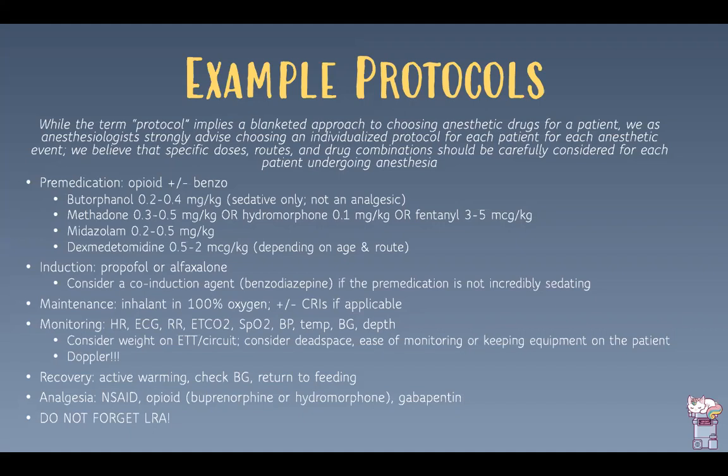Monitoring is standard: heart rate, ECG, respiratory rate, end-tidal CO2, pulse oximetry, blood pressure, temperature, blood glucose, and anesthetic depth. Consider the weight of the endotracheal tube and circuit on the patient, as significant dead space affects monitoring and the patient's ability to ventilate. These patients can be very difficult to monitor and equipment may not stay in place — try not to get frustrated. Doppler is an excellent tool, providing both heart rate assessment and blood pressure values.